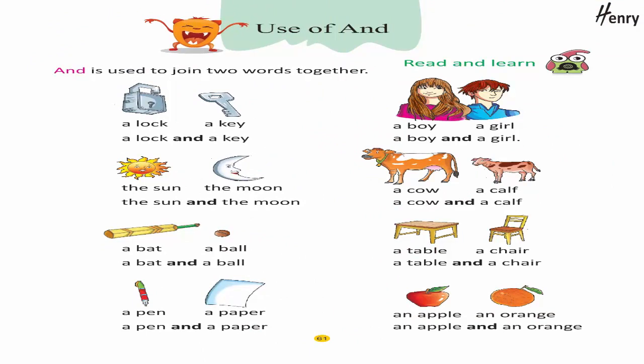Use of 'and': 'And' is used to join two words together. A lock and a key. A boy and a girl. The sun and the moon. A cow and a calf. A bat and a ball. A table and a chair. A pen and a paper. An apple and an orange.